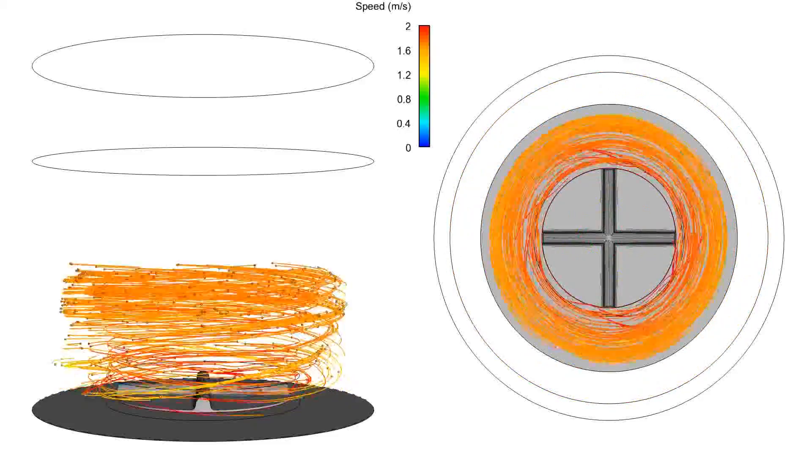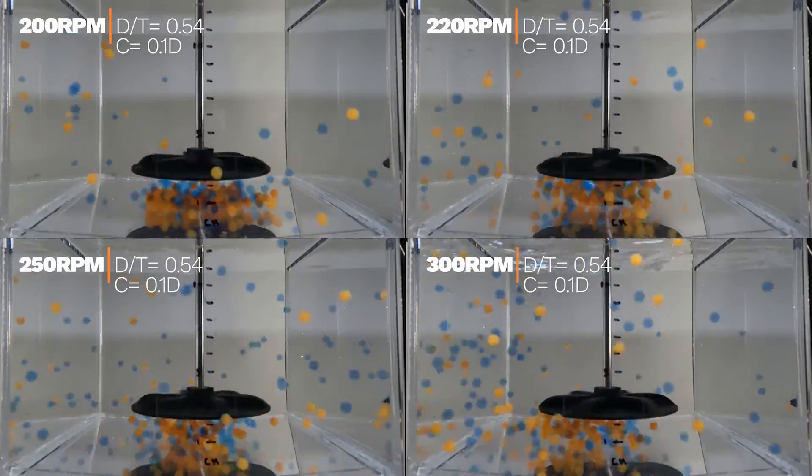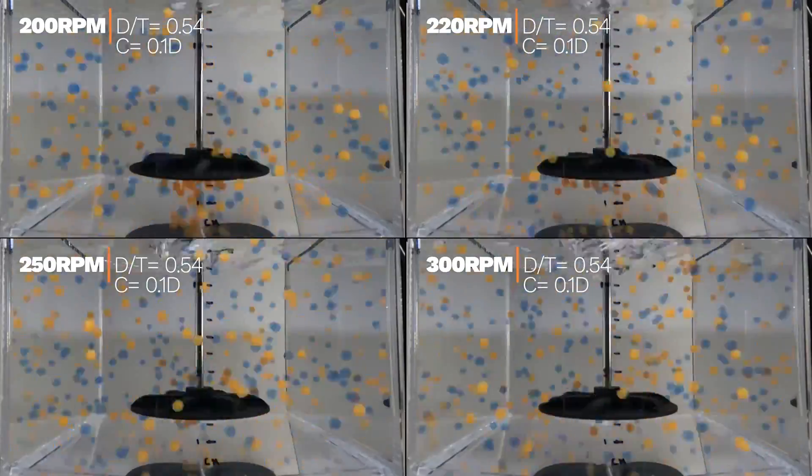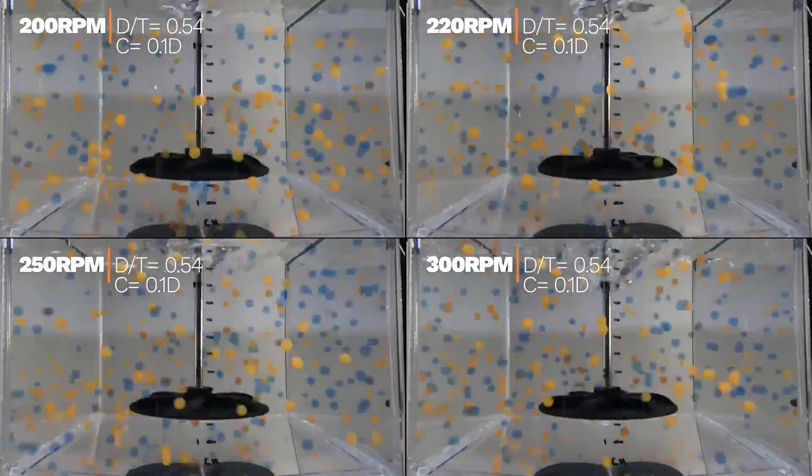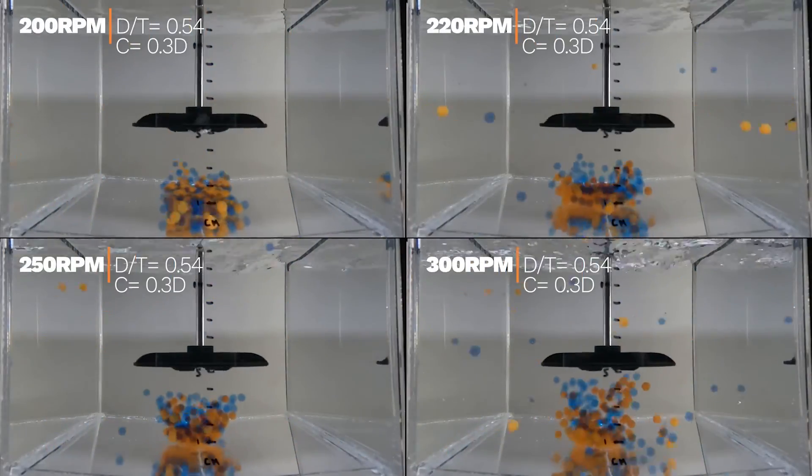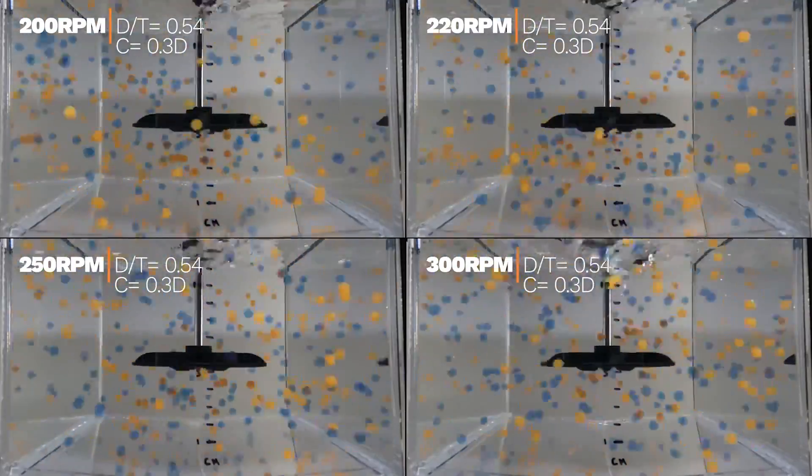We present this data not as a critique of competitors, but as education to the end user to make educated purchase decisions. The Mescalatoris system is versatile as it allows you to modify not only the agitator speed and rotation direction, but also the height. This allows for optimum agitation regardless of the batch size.